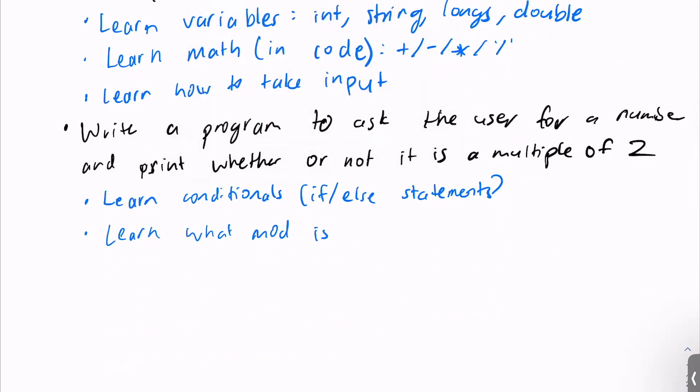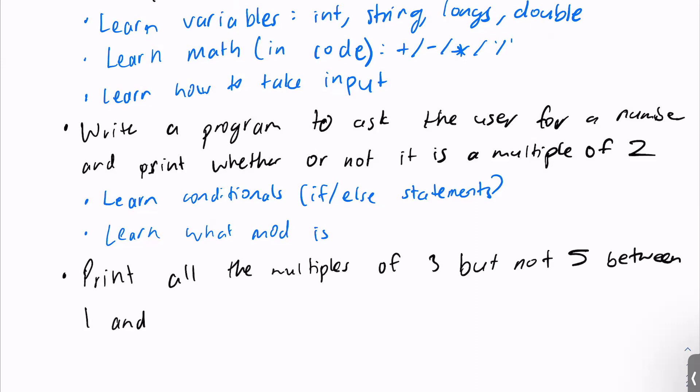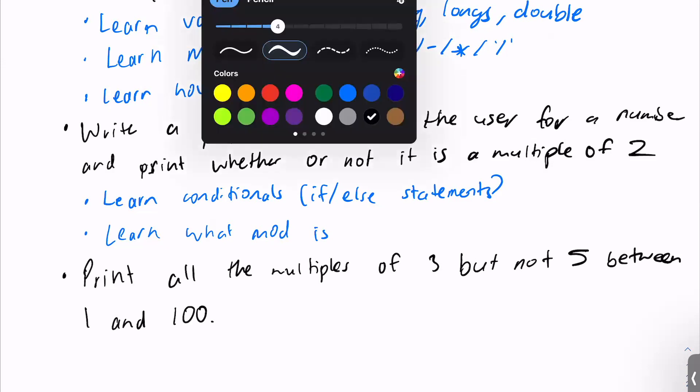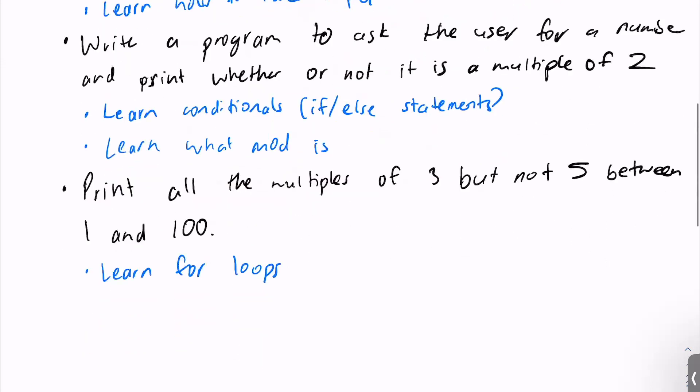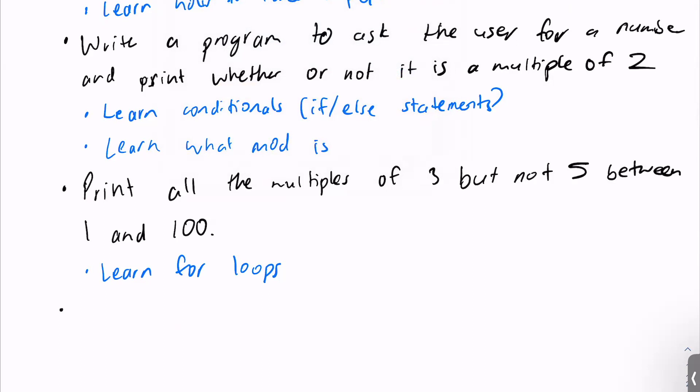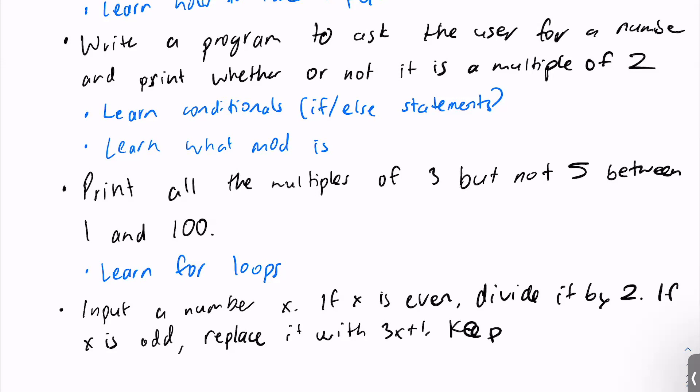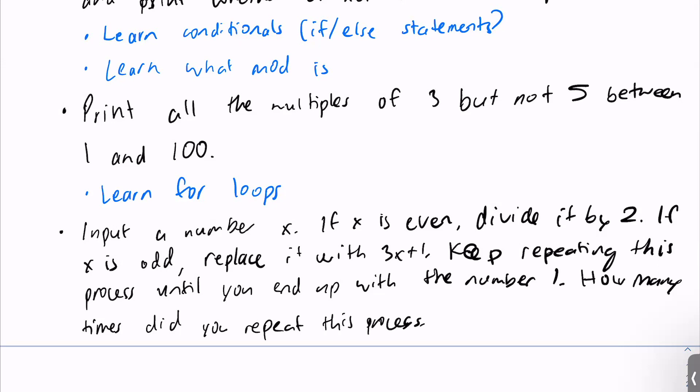The next thing we need to learn is loops. Now, there are two types of loops: for loops and while loops. Now, for loops, there are so many different things you can do with loops. It's kind of hard for me to give you a specific problem and say if you can solve this problem, you probably have a good grasp of loops. But I still will give a problem. Print all the multiples of three, but not five, between one and hundred. So if you can do this, you probably have a decently good grasp of loops. And to do this, you need to learn for loops. All right. Now, the next thing for while loops, it's a pretty standard program. The idea of this program is you take input a number x, and then if x is even, divide it by two. If x is odd, then replace it with three x plus one. Keep repeating this process until you end up with one. And then the question is, how many times did you repeat this process? And I will specify it as output how many times you repeated this process. And in order to do this, we need to learn while loops.